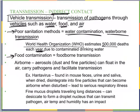Foodborne transmission is also common. If someone thaws food incorrectly — such as leaving it on the counter all day — bacteria can grow on the thawed outer surface while the inside is still frozen. In restaurants, the fecal-oral route can contaminate food. Leaving food out too long is another risk; for example, potato salad with dairy left in warm sun at a picnic can cause illness due to bacterial growth.